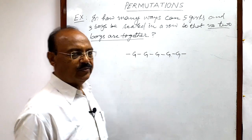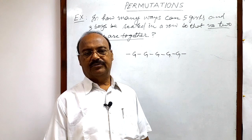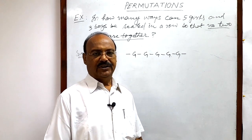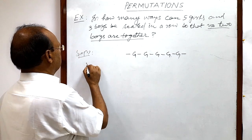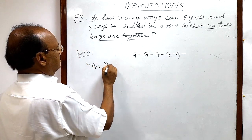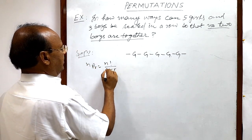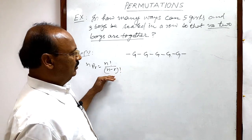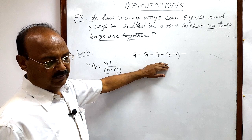In the previous videos we have discussed so many times the very interesting and important formula of permutations which is like this: NPR is equal to N factorial by N minus R factorial. This formula will be used in solving this problem.